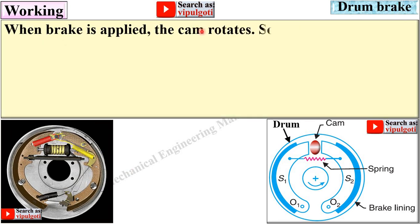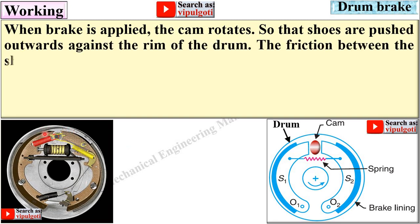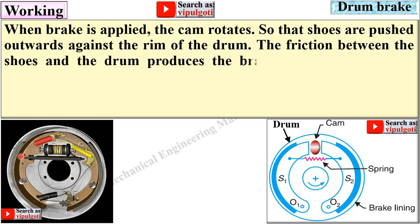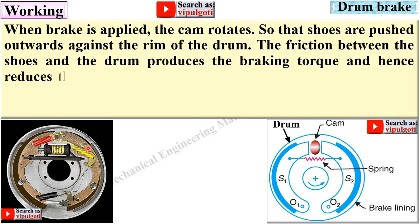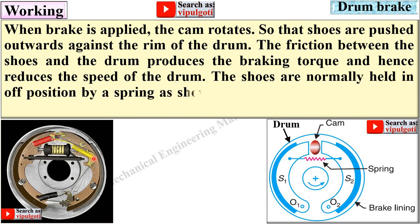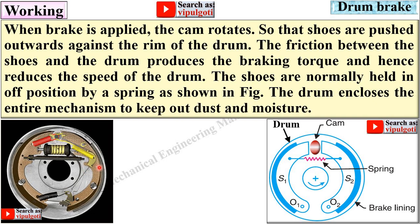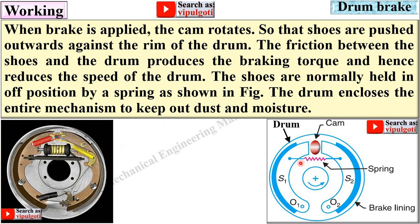When brake is applied, the cam rotates so that the shoes are pushed outwards against the rim of the drum. The friction between the shoes and the drum reduces the braking torque and hence reduces the speed of the drum. The shoes are normally held in the off position by a spring. The drum encloses the entire mechanism to keep out dust and moisture.